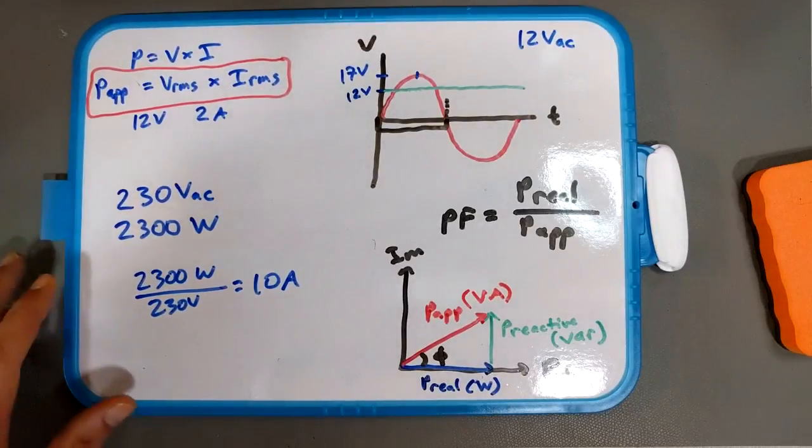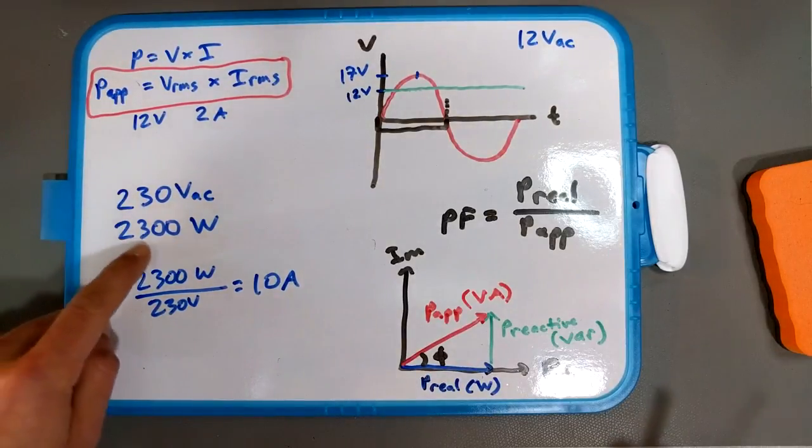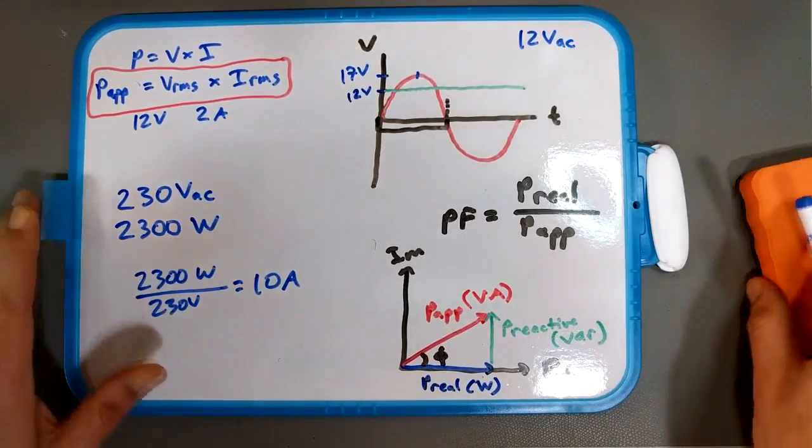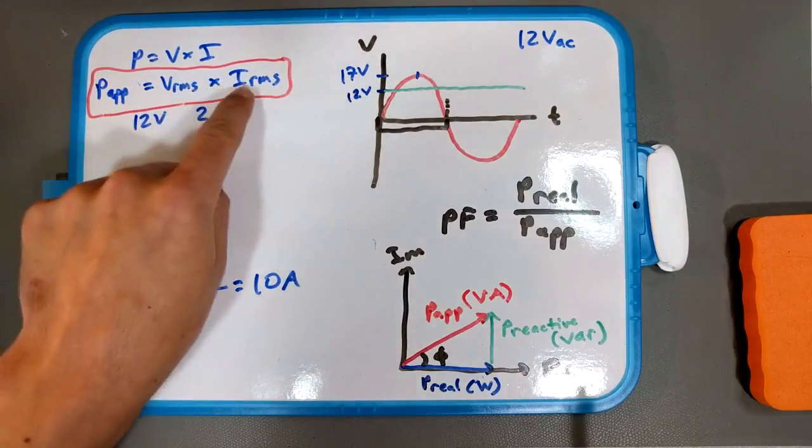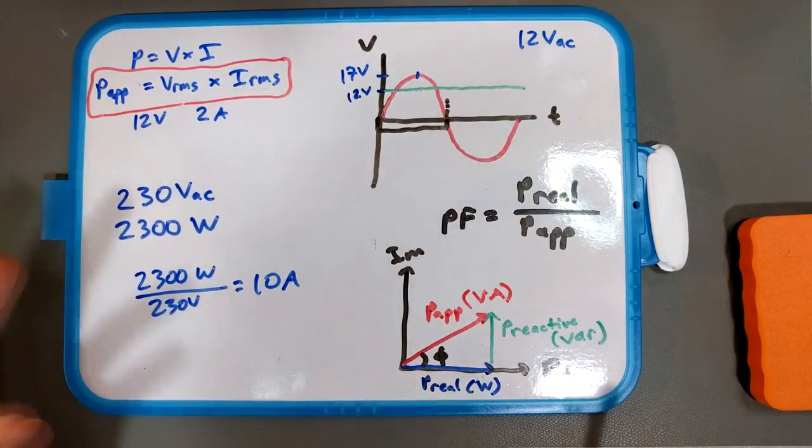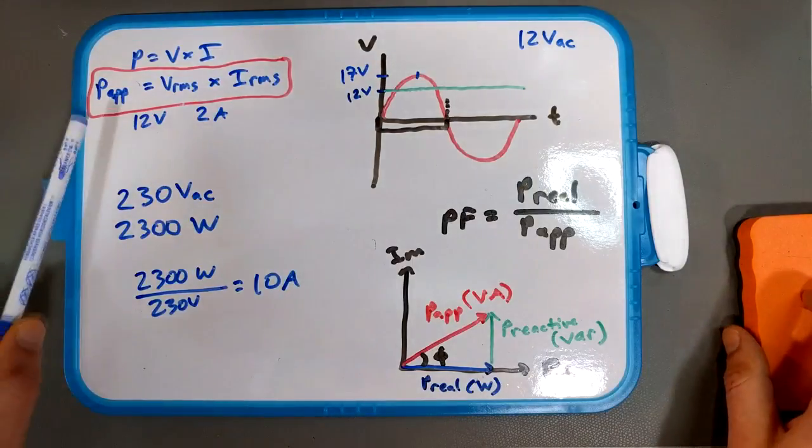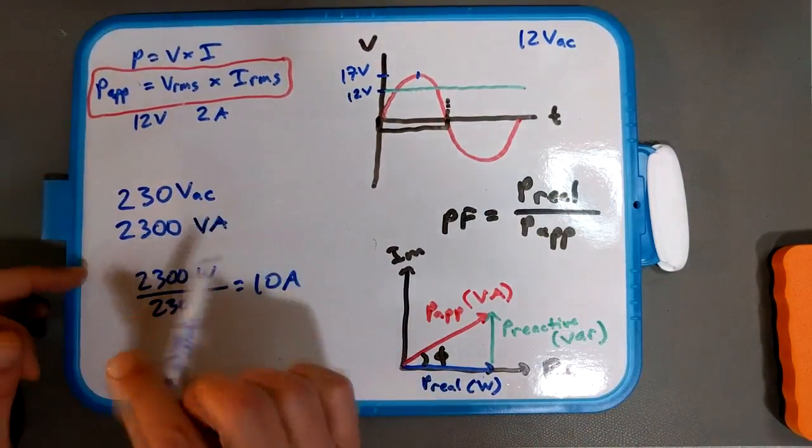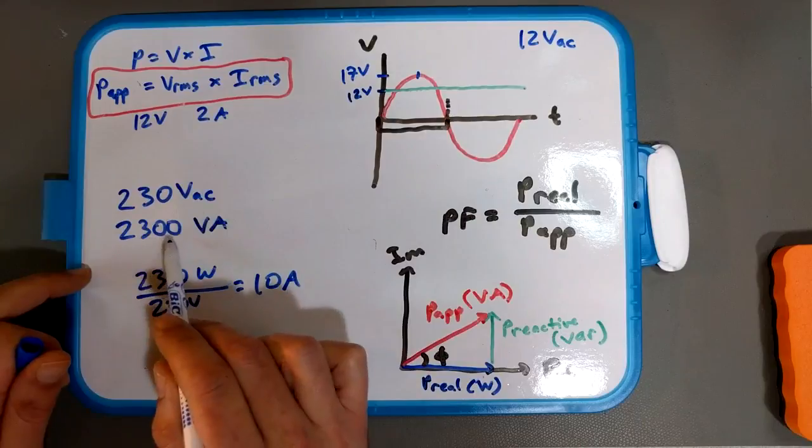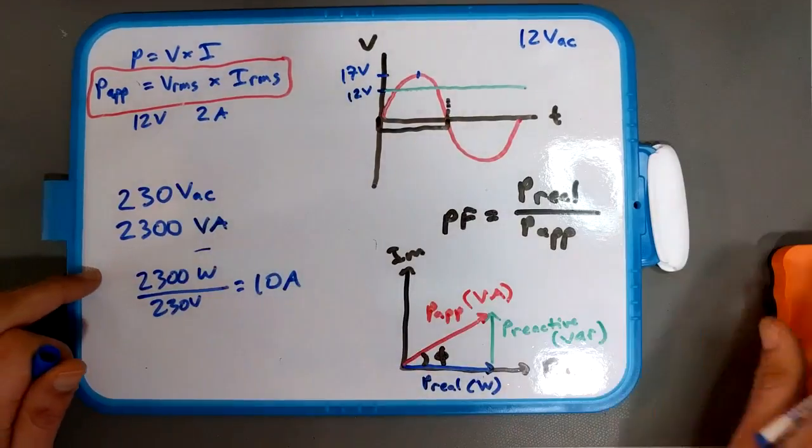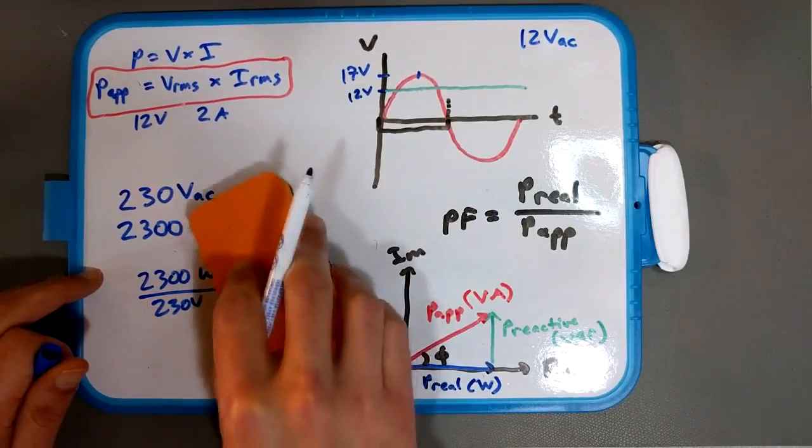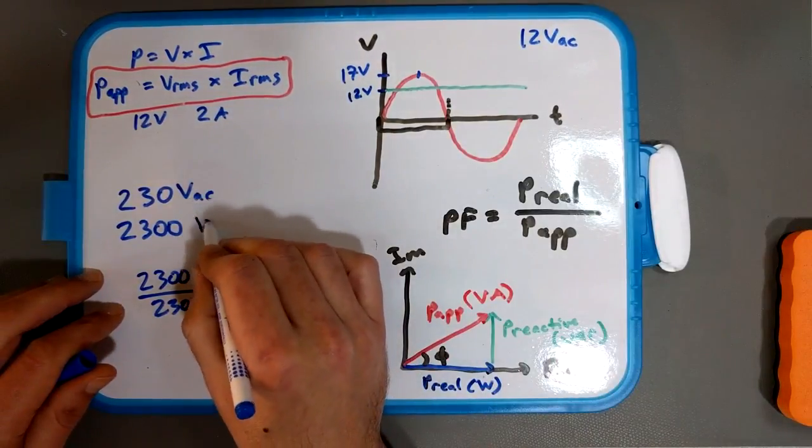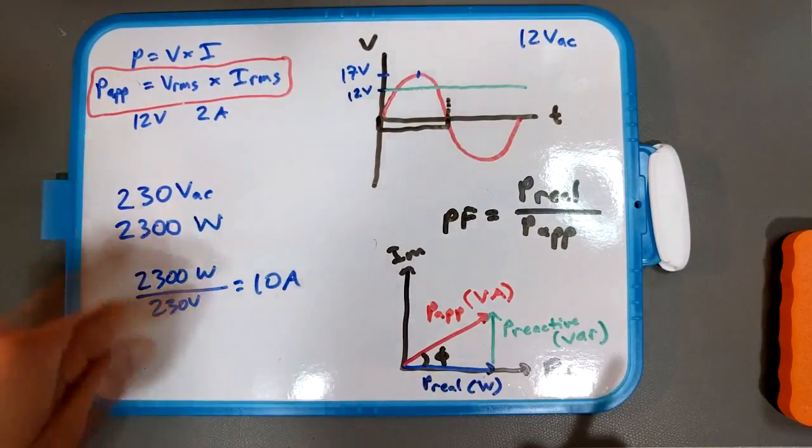So back to our example of the washing machine here. You have 230 volts AC. It consumes 2300 watts. Notice it does not say VA. If this actual apparent power, volts RMS times current RMS, actually gives you VA. So in that case, if we see that 230 volts AC, 2300 VA, that's apparent power. That's including the power company's losses, let's say. But if you see watts, that's real power. Usually this is the way engineers do it.